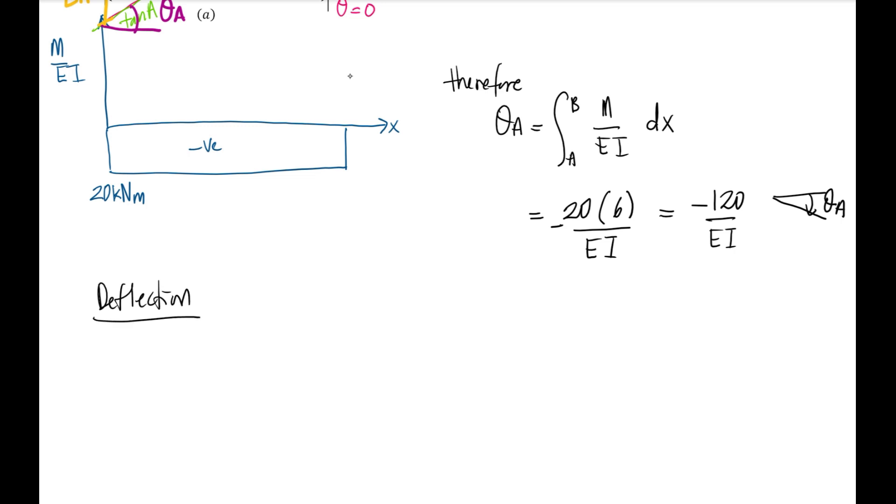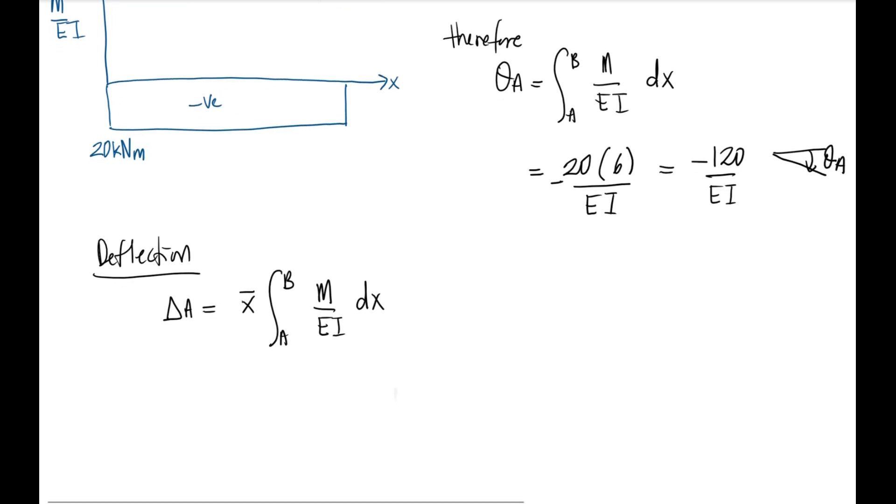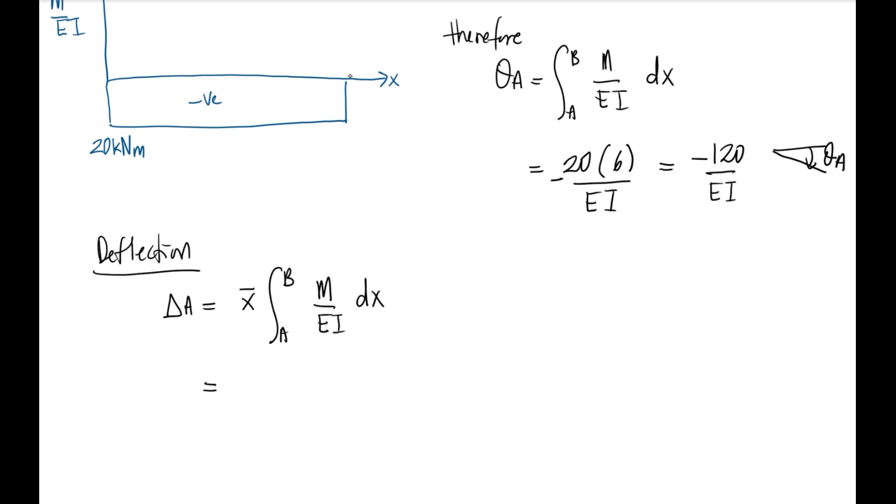Δ_A equals x̄ times the integral from A to B of M over EI dx, which is the area under the graph from point A to B. We're using theorem number two. Your area is the same as the slope: 20 times 6 over EI. For x̄ here,